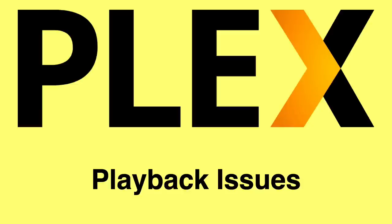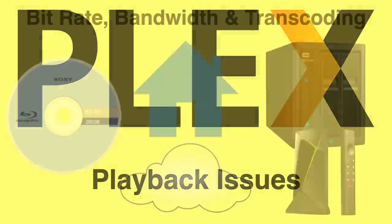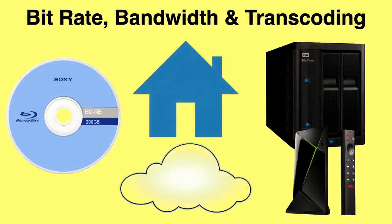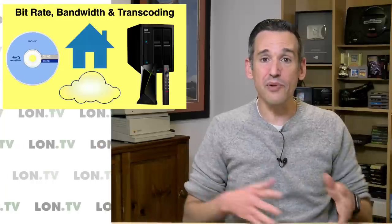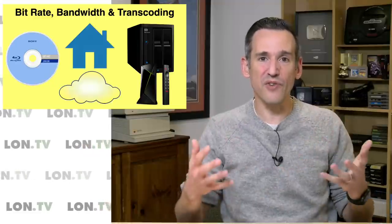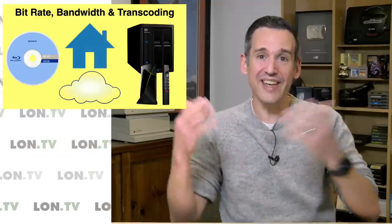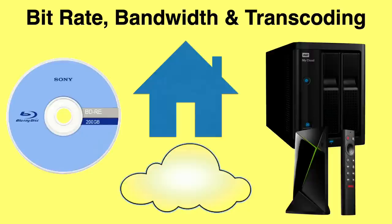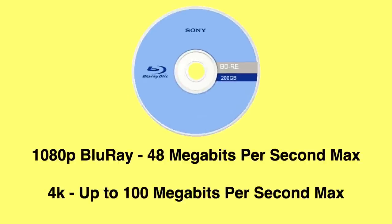In order to troubleshoot playback issues with Plex, you've got a lot of different variables to think about. The first is the bit rate of the media you're trying to play back. You then have to think about the bandwidth available on your home network and how you're allocating that bandwidth to different devices. If you're trying to send media outside your home, you need to think about your upstream bandwidth from your ISP, and then you also have to look at the hardware capabilities of both your client devices and your Plex server.